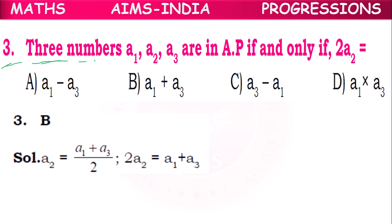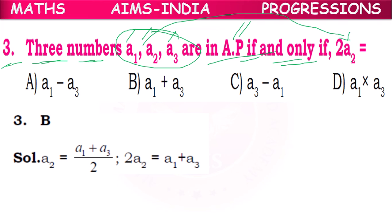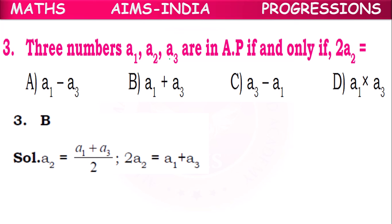Third question: Three numbers A1, A2, A3 are in AP if and only if twice the second term 2A2 equals the sum of the other two terms, A1 + A3. So option B is correct.